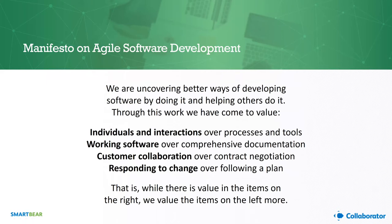In February of 2001, a bunch of software enthusiasts got together and published the Agile Manifesto, which has really gained notoriety since then. The big things people typically point to are the four core values: individuals and interactions over processes and tools, working software over comprehensive documentation, customer collaboration over contract negotiation, and responding to change over following a plan. That last one is really critical — if you want to work agile and move quickly, responding to change is at the heart of that mentality.